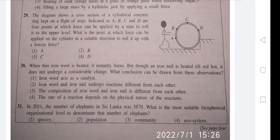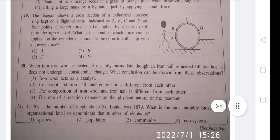Question 29: The diagram shows a cross section of a cylindrical concrete ring kept on a flight of steps. Indicated as A, B, C, and D are four points at which force can be applied by a man to roll it to the upper level. What is the point at which force can be applied in a suitable direction to roll it up with the lowest force? So here B is the most suitable point, B.